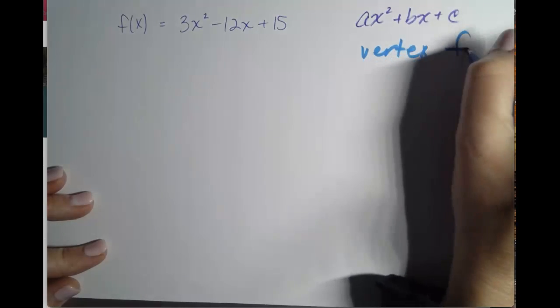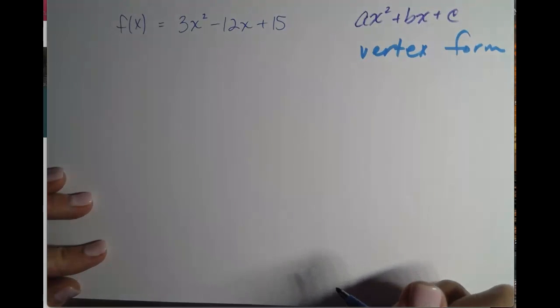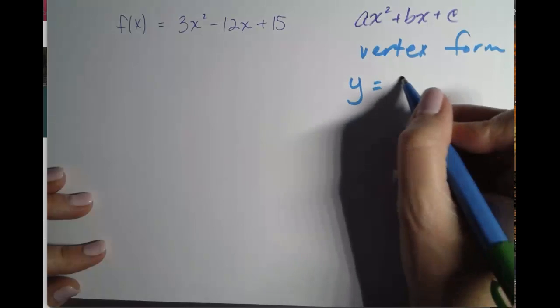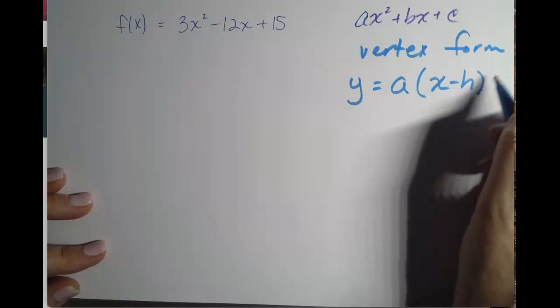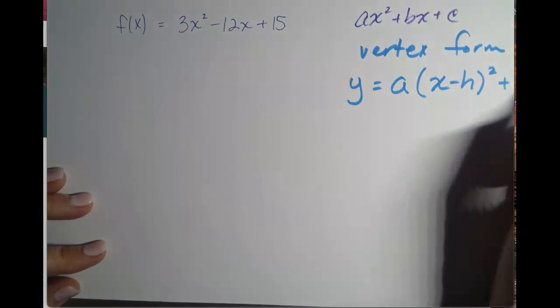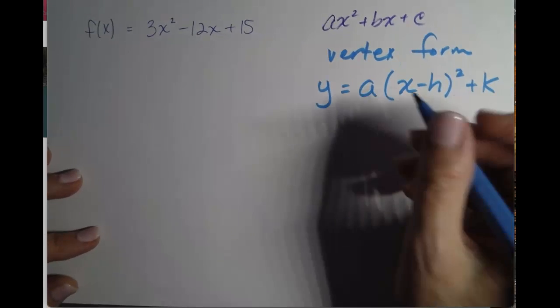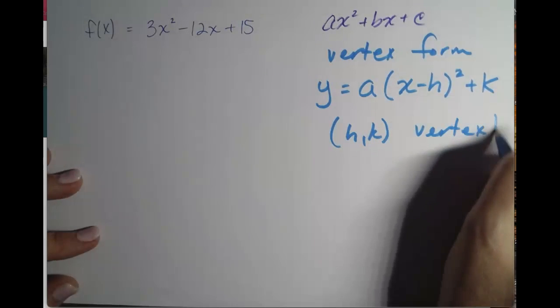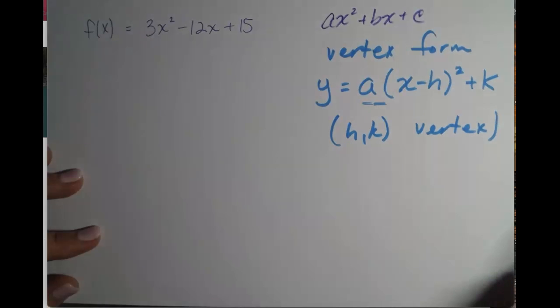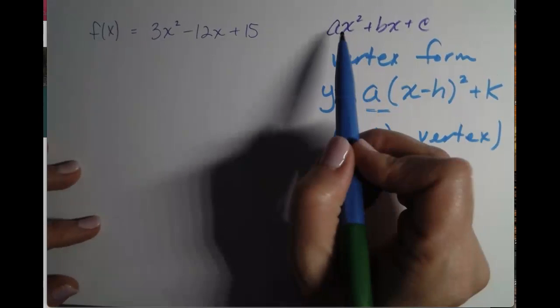So vertex form, remember, looks like this: y equals a times x minus h squared plus k. Remember that h, k is the vertex. And of course your a value is the same a value that you see in the quadratic form.